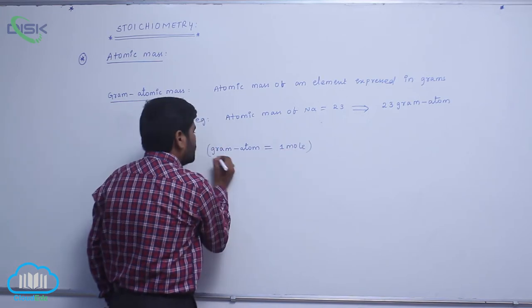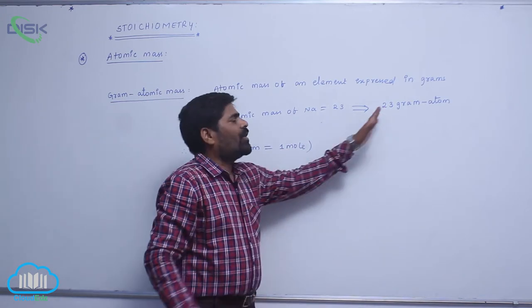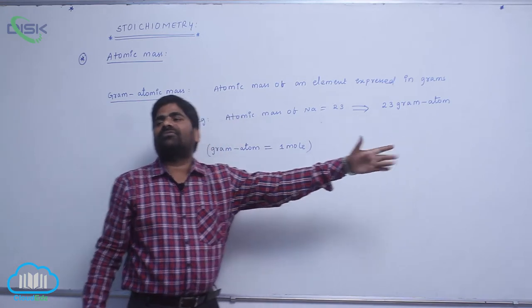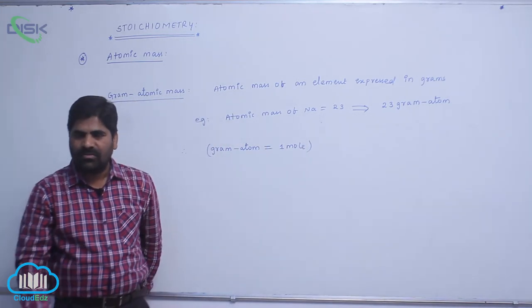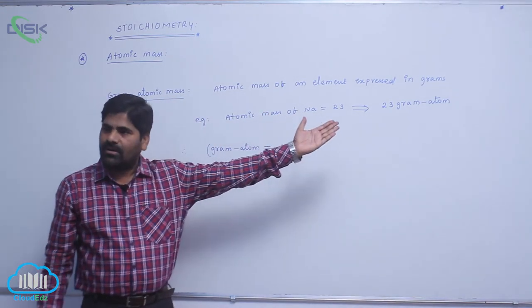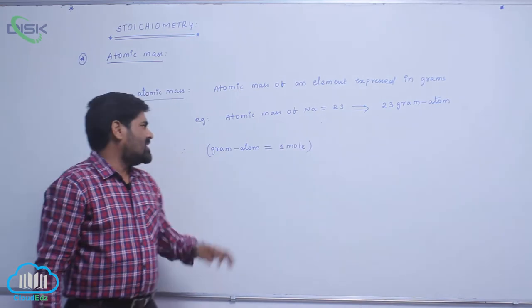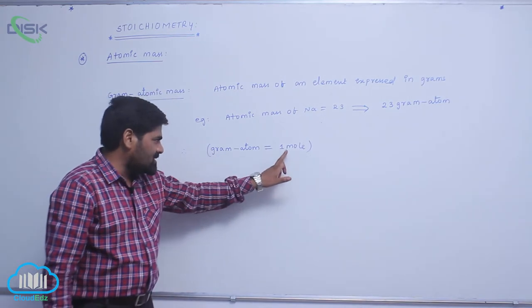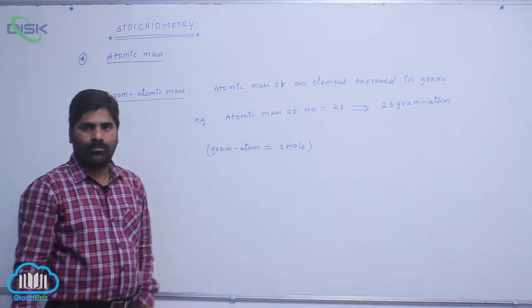One mole indicates 23 grams of sodium. So that is the reason why gram atom always indicates one mole.